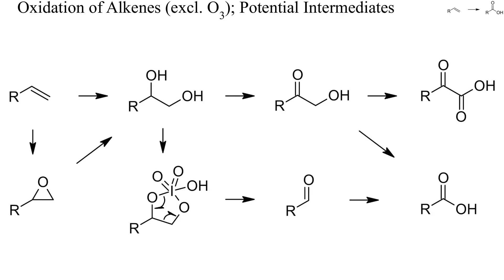Alkenes can be cleaved by treatment with ozone, and the initially formed ozonides can in fact be cleaved oxidatively to carboxylic acids, either by heating with acids or with hydrogen peroxide. However, ozone isn't always readily available in most laboratories and is often too expensive for large-scale preparations. Several more convenient alternatives are available today.